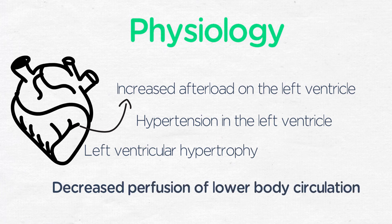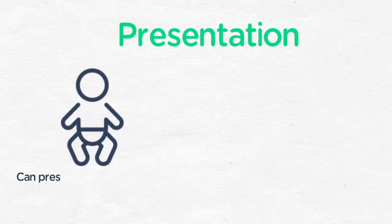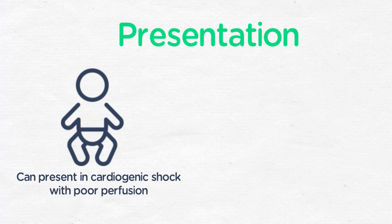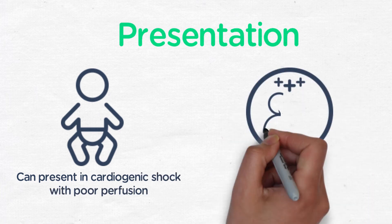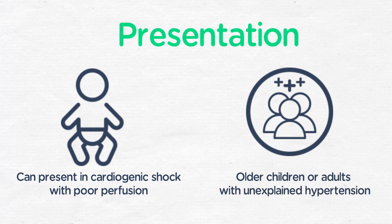There are two common times to present. One is in infants, where they can present in cardiogenic shock with poor perfusion, and the other is older children or even adults who have unexplained hypertension. This difference probably has to do with the degree of narrowing, timing of constriction, and relative development of collateral arterial supply.